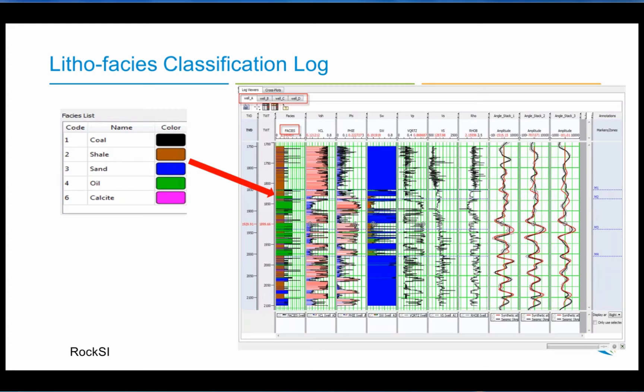I might mention that in the elastic properties list, we have coal, shale, sand. That's water sand. Oil sand and calcite. And you can see the color coding in those there.